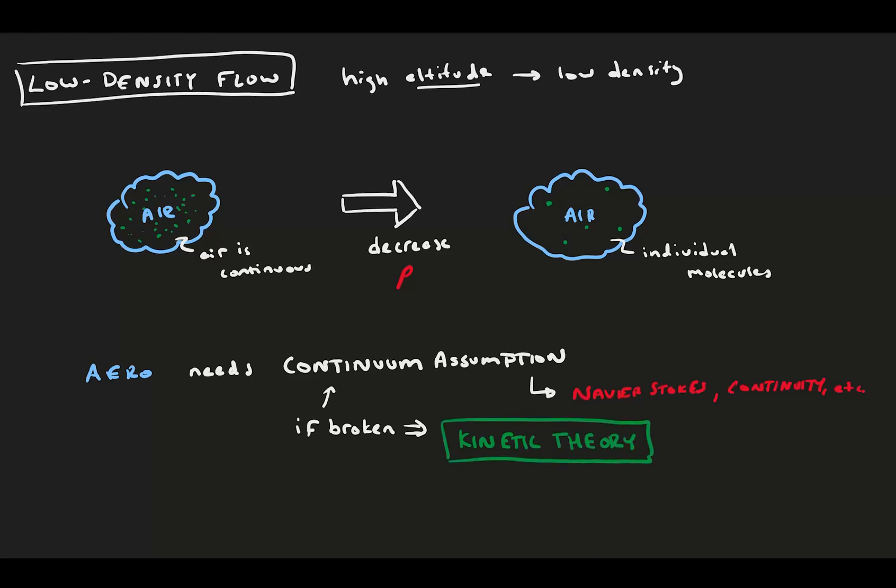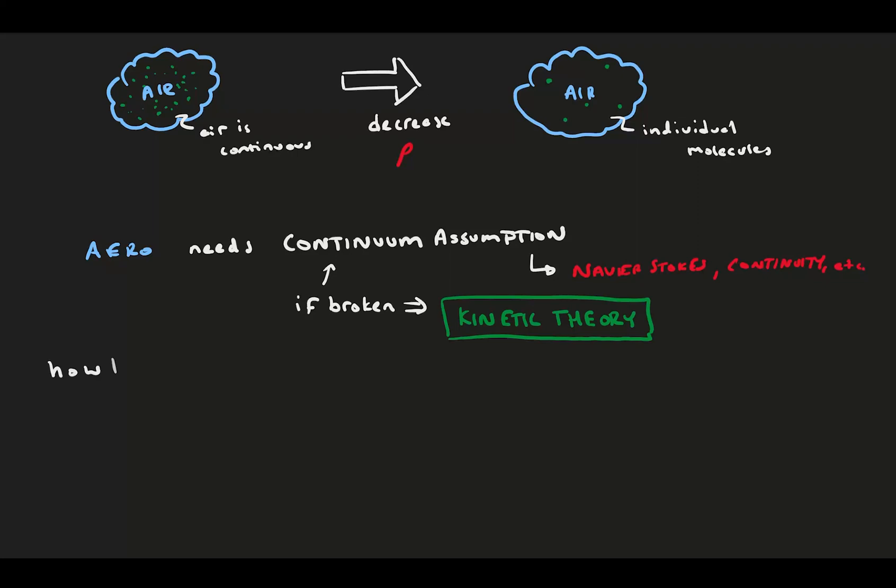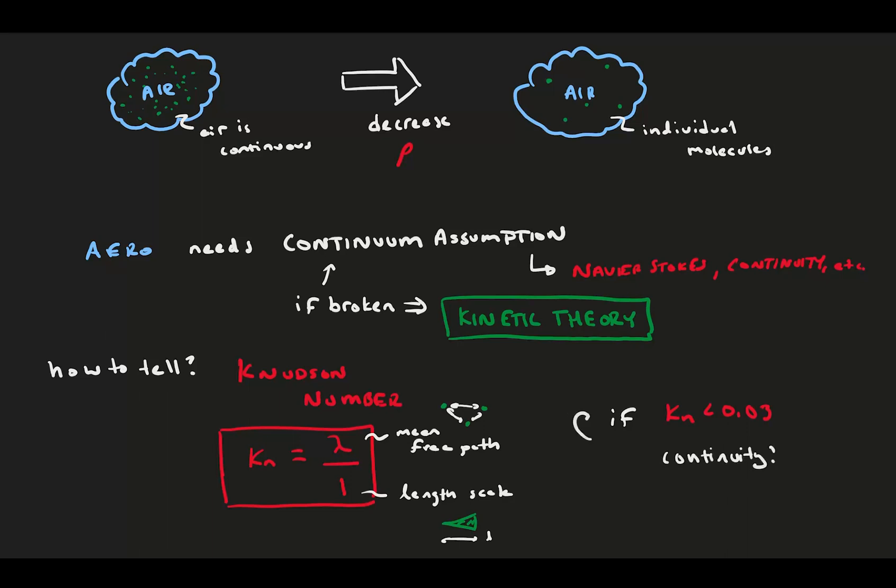For this, we use kinetic theory, which approaches the physics from an individual particle perspective instead of a continuous fluid perspective. Now, how do we tell if we can make the continuous assumption or not? To do this, we use the non-dimensional number called the Knudsen number, which is a ratio of the mean free path of the gas, kind of like how far apart molecules are, and the length scale of our vehicle moving through the fluid. When the Knudsen number is equal to 1, there are only a few molecules in the vicinity of our vehicle. Our cutoff for the continuous assumption is usually taken to be about 0.03. Anything larger and kinetic theory is needed for analysis.